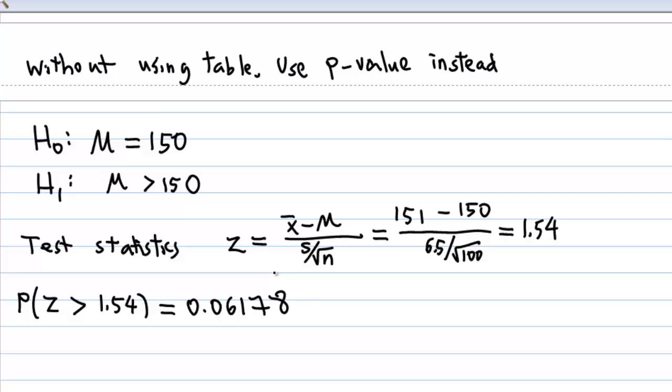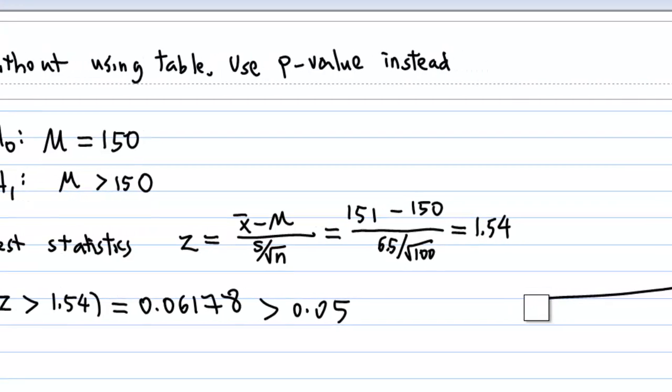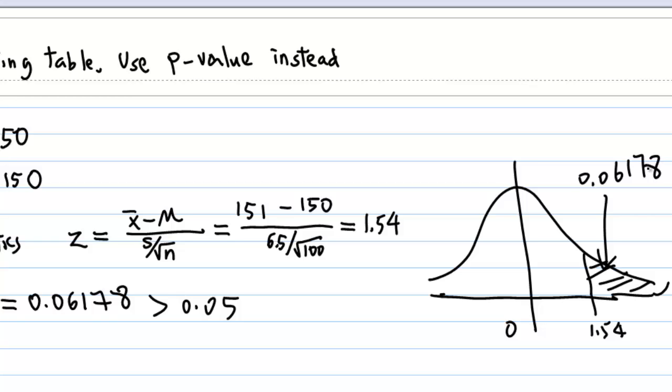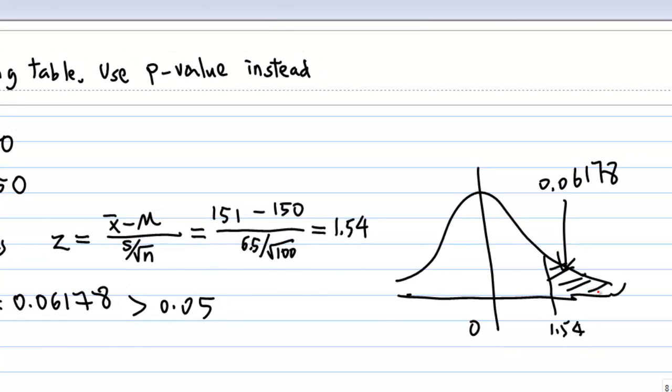And this value is greater than 0.05, 5%. The area to the right of 1.54 is 0.06178, and definitely greater than 0.05 because 1.64 is somewhere here where the area is 0.05.